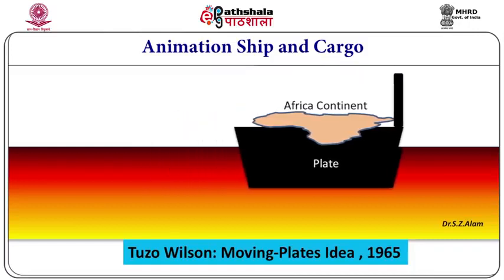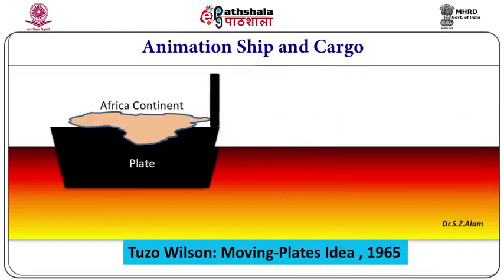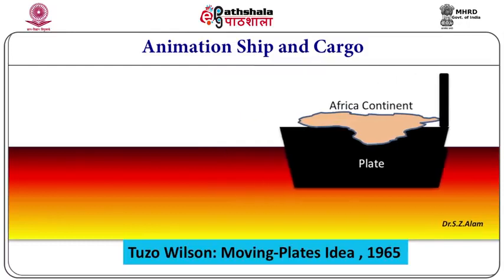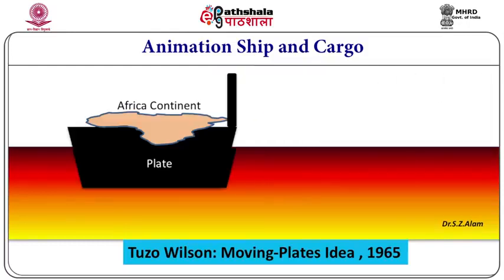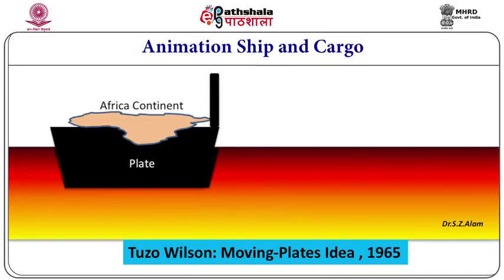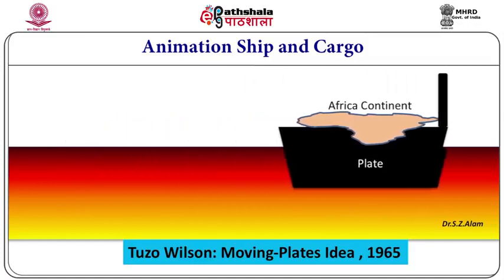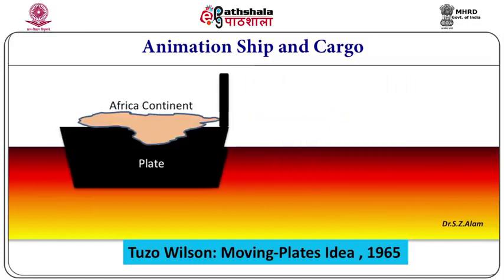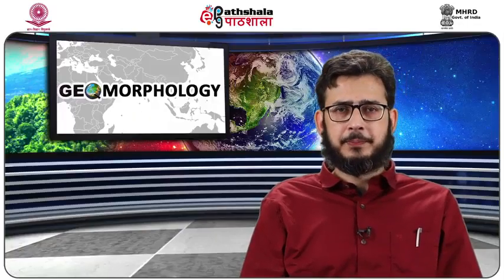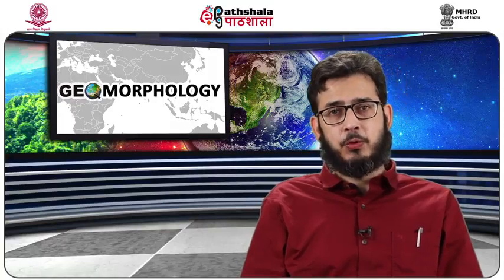We now know that continents are like cargo containers on a ship — the ship transports the cargo containers, as is evident from this animation. On the planet, this ship can be considered as a plate. Tuzo Wilson was the first to introduce the moving plate idea in the year 1965, but his purpose was to explain transform faults, which later became an important feature to delineate the plate boundary.